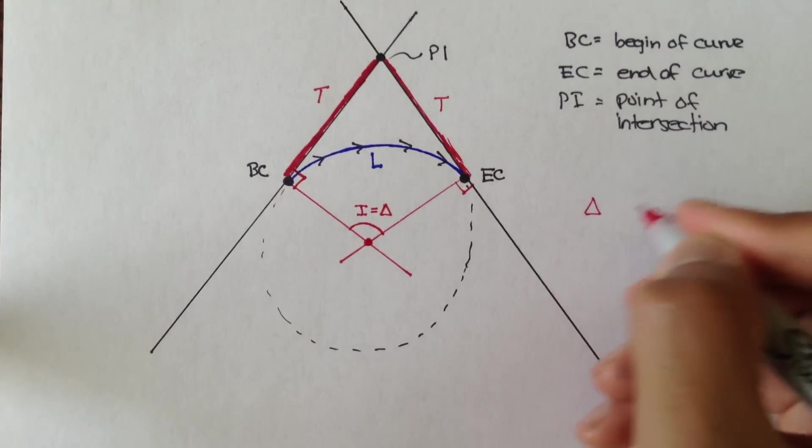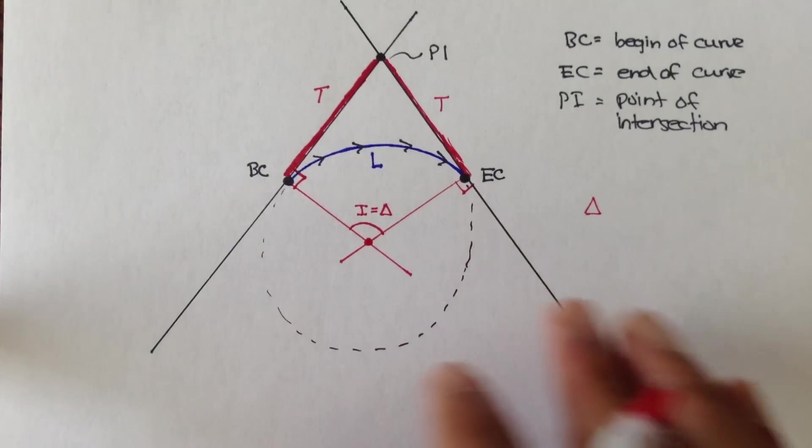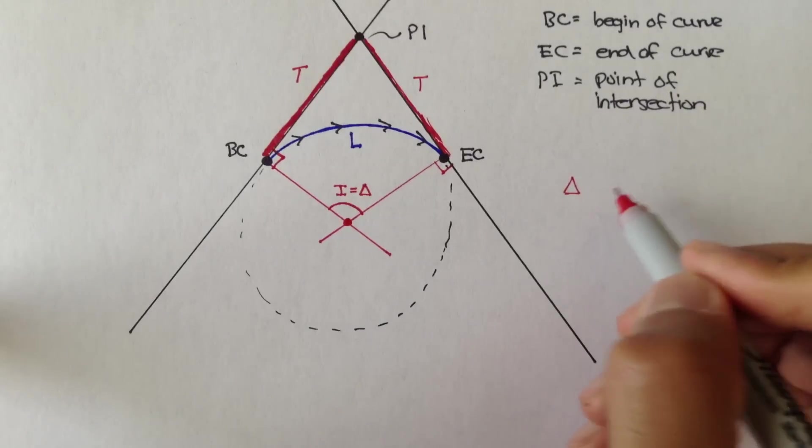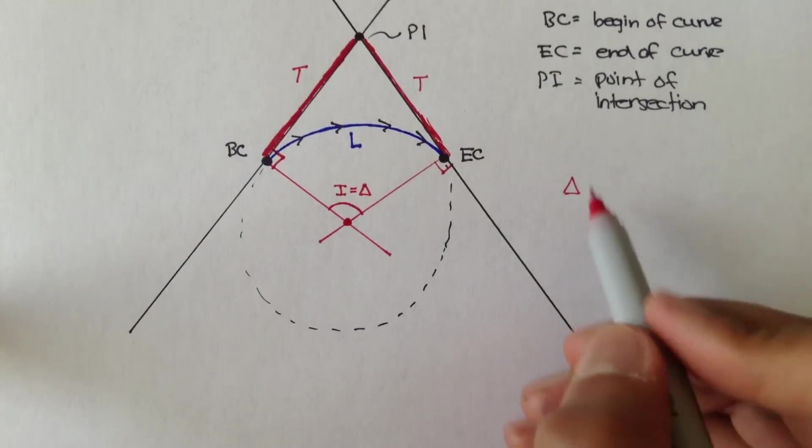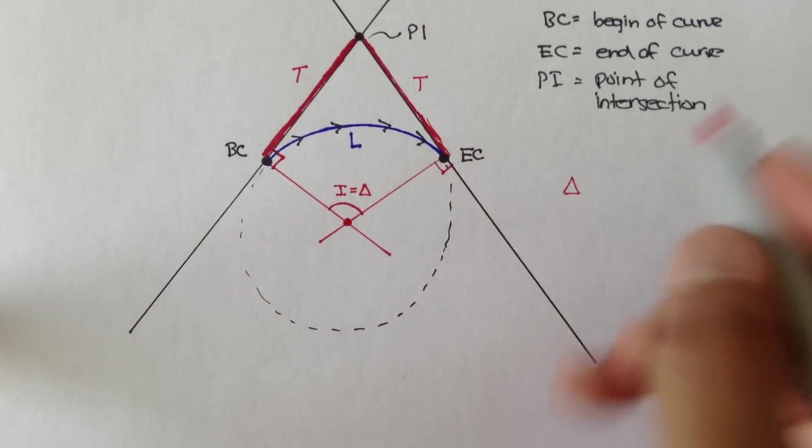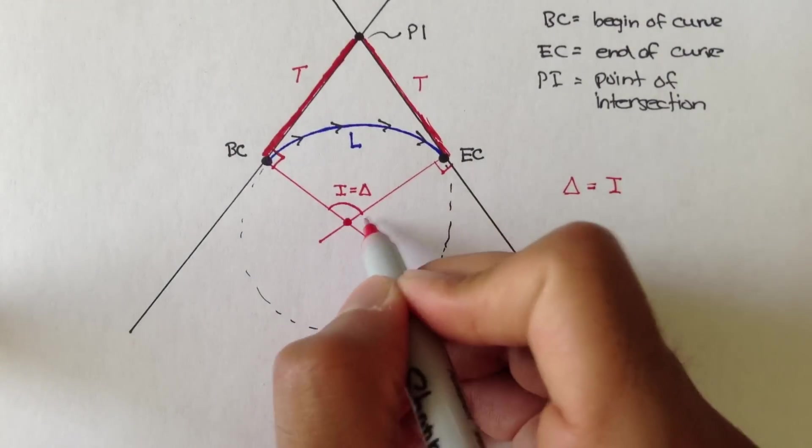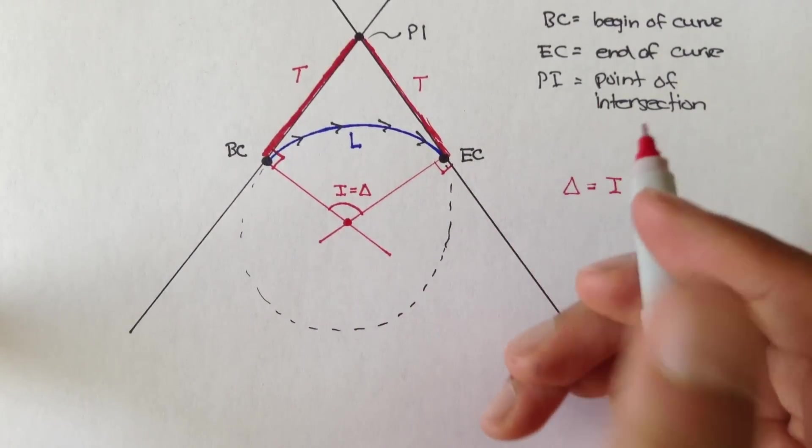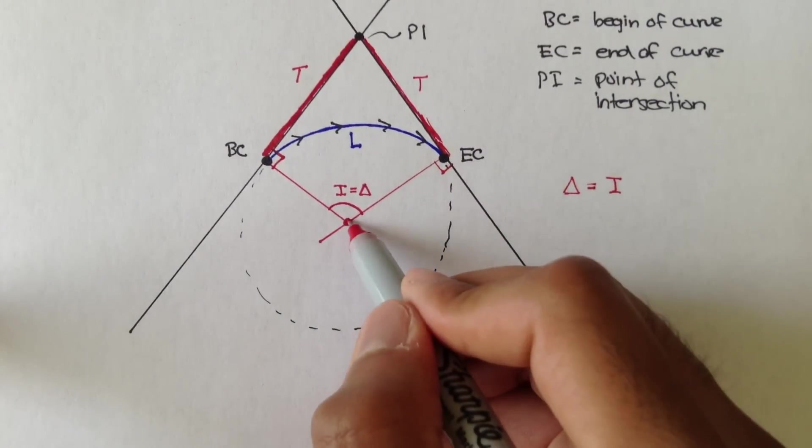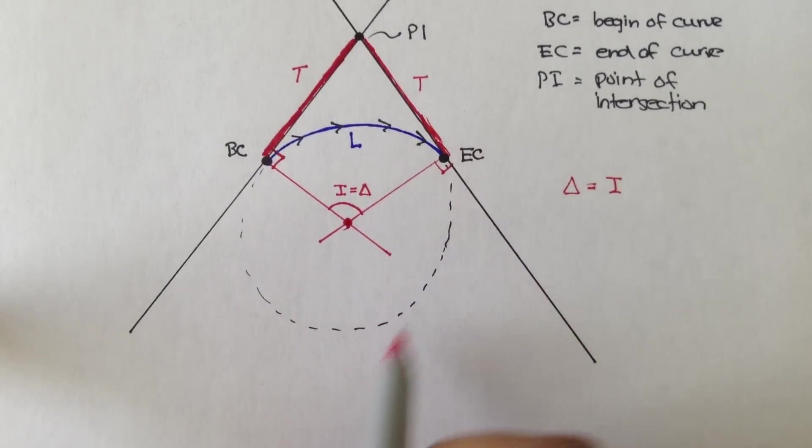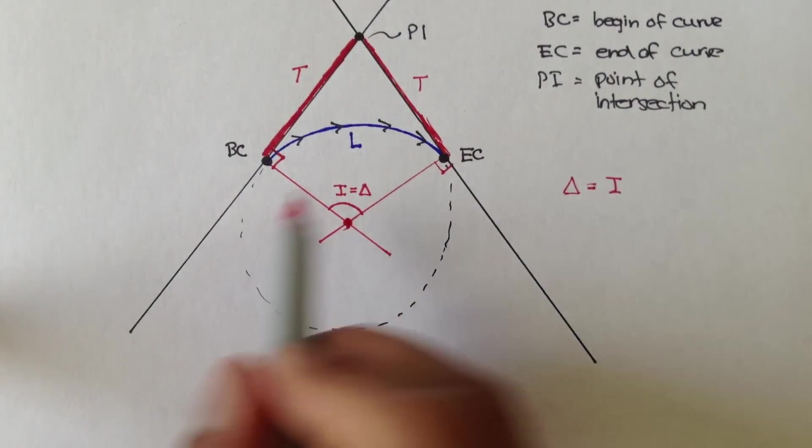Now delta, in horizontal curves, when we talk about horizontal curves, delta is not the stadia intervals. Remember, stadia intervals for delta, that's something totally different. Delta here for horizontal curves just means the interior angle between these two lines. And where this point right here is actually the center of this circle, of this dotted circle.